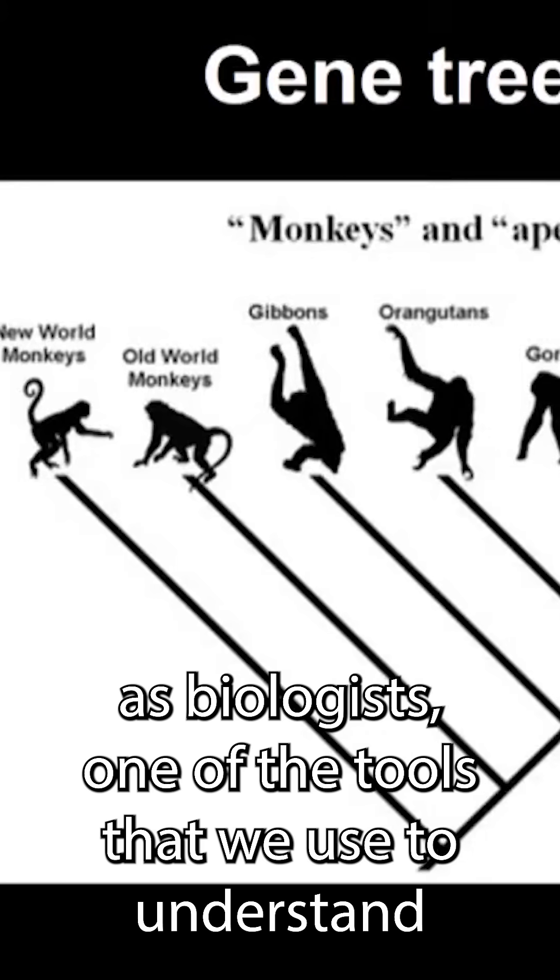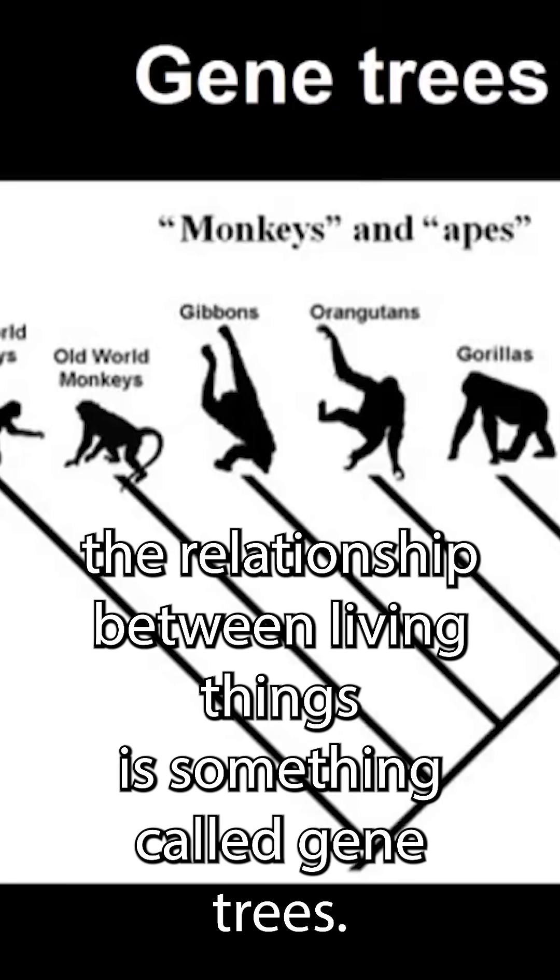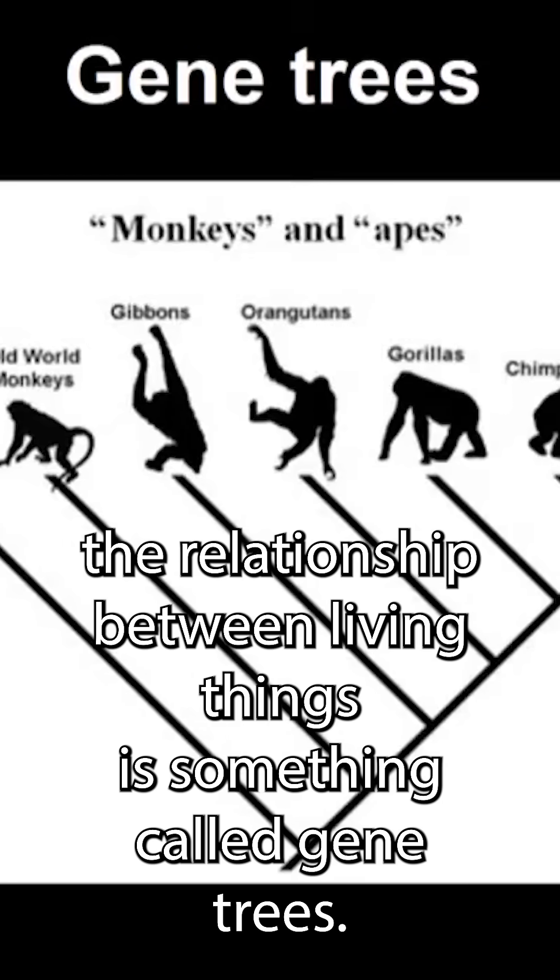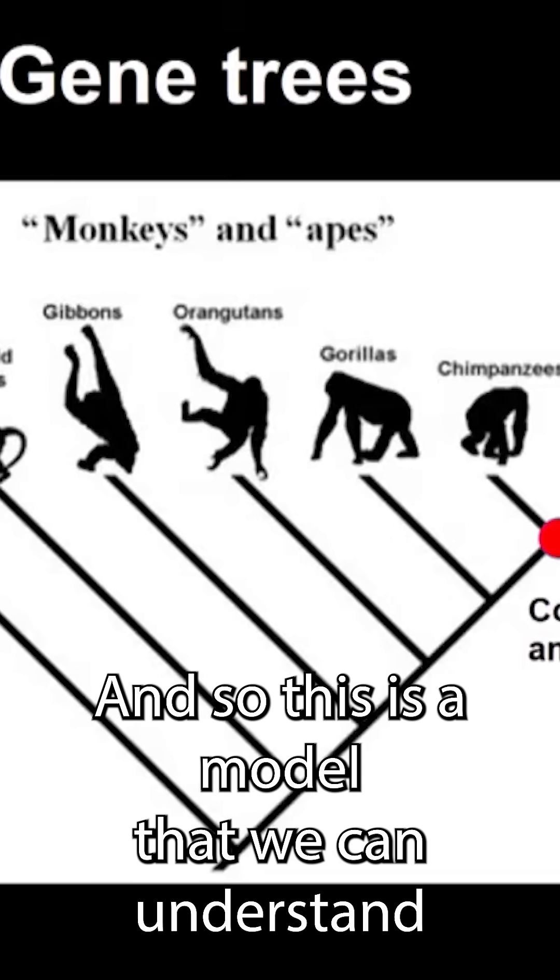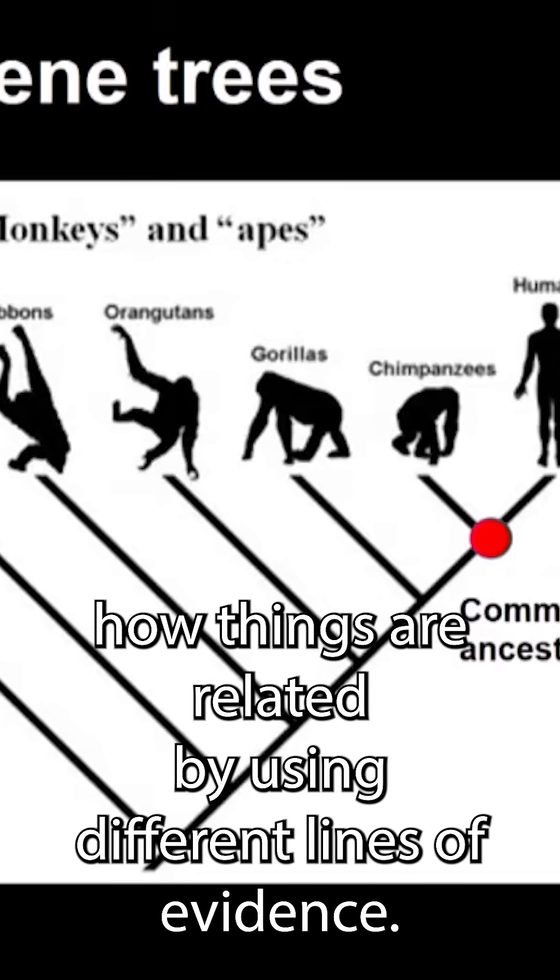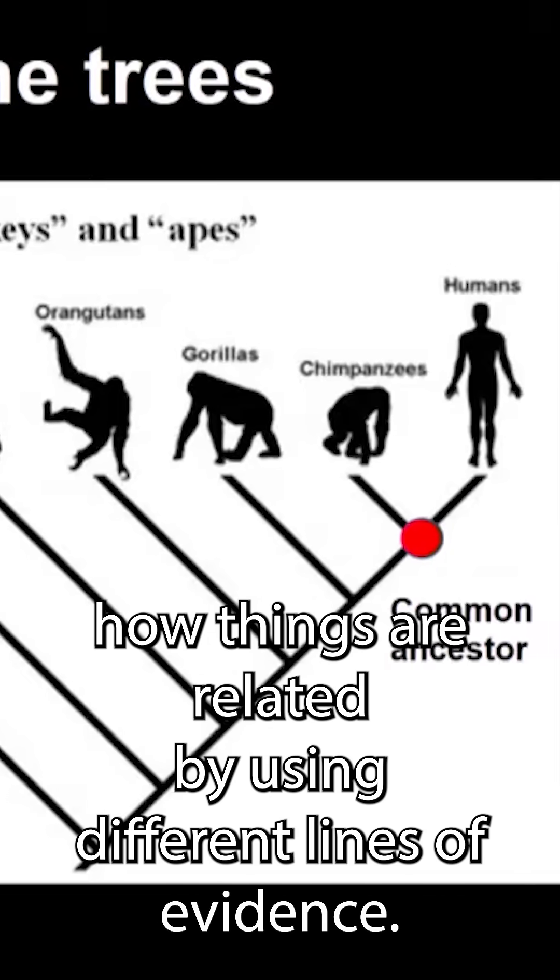As biologists, one of the tools that we use to understand the relationship between living things is something called gene trees. This is a model that we can understand how things are related by using different lines of evidence.